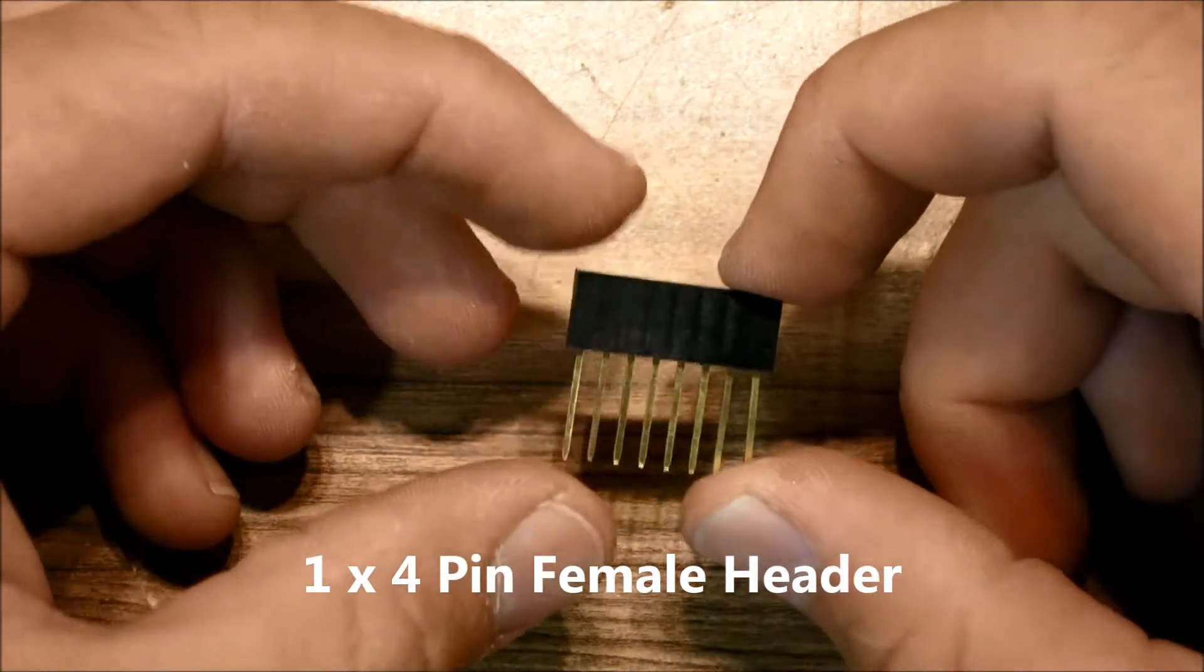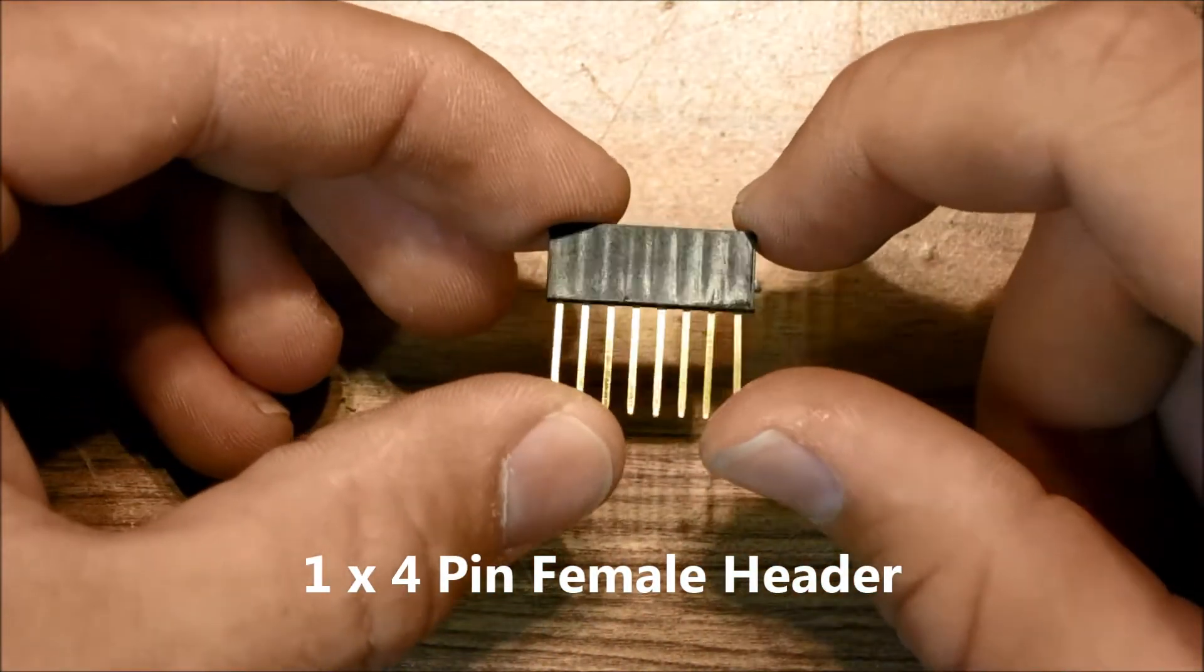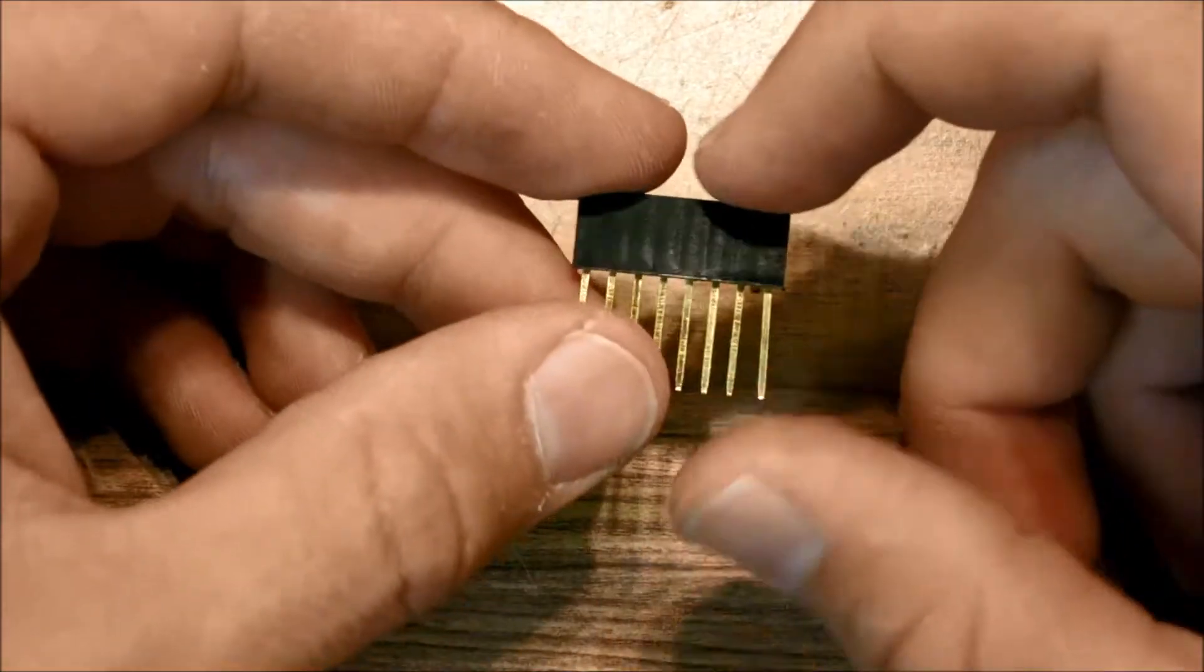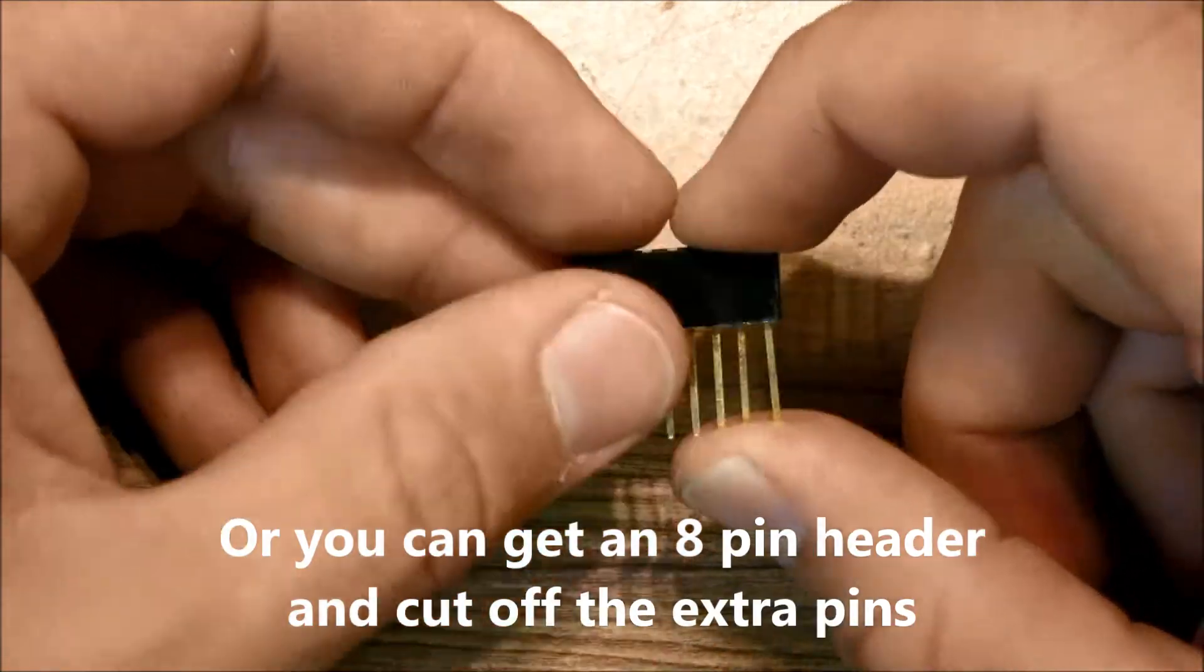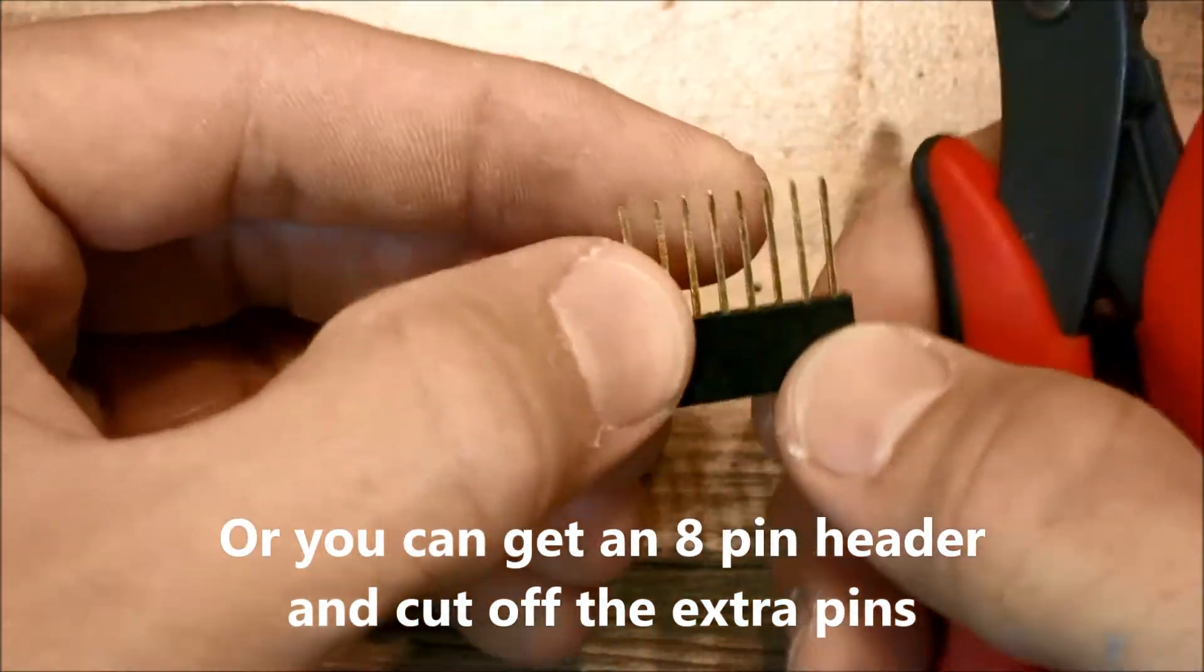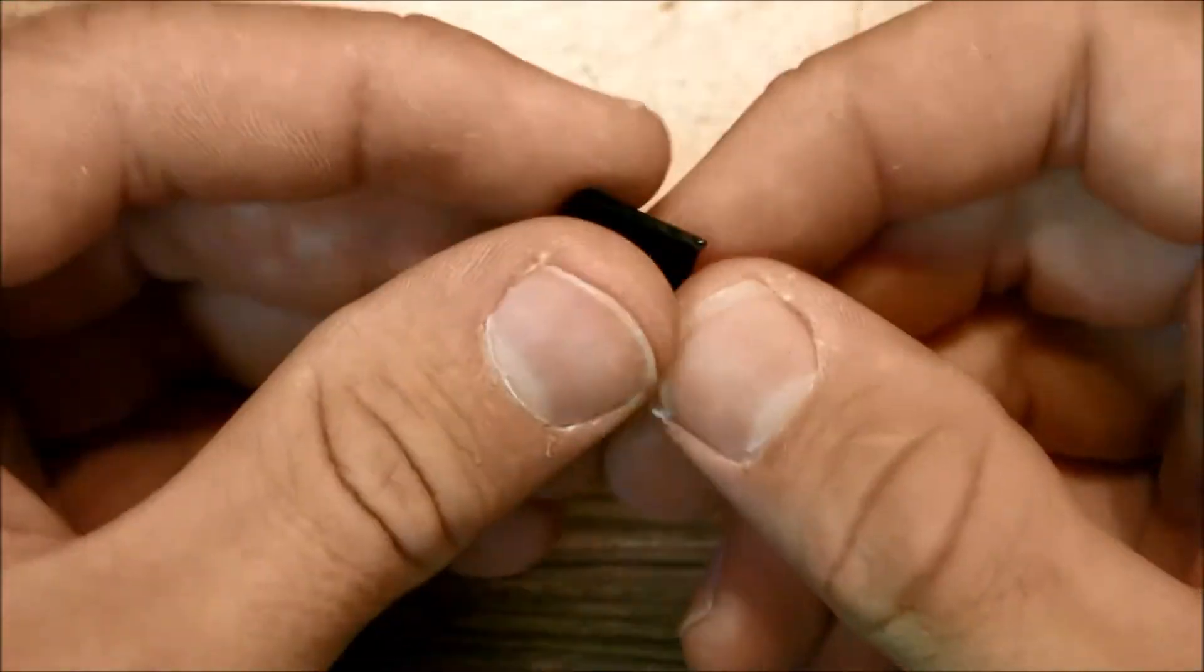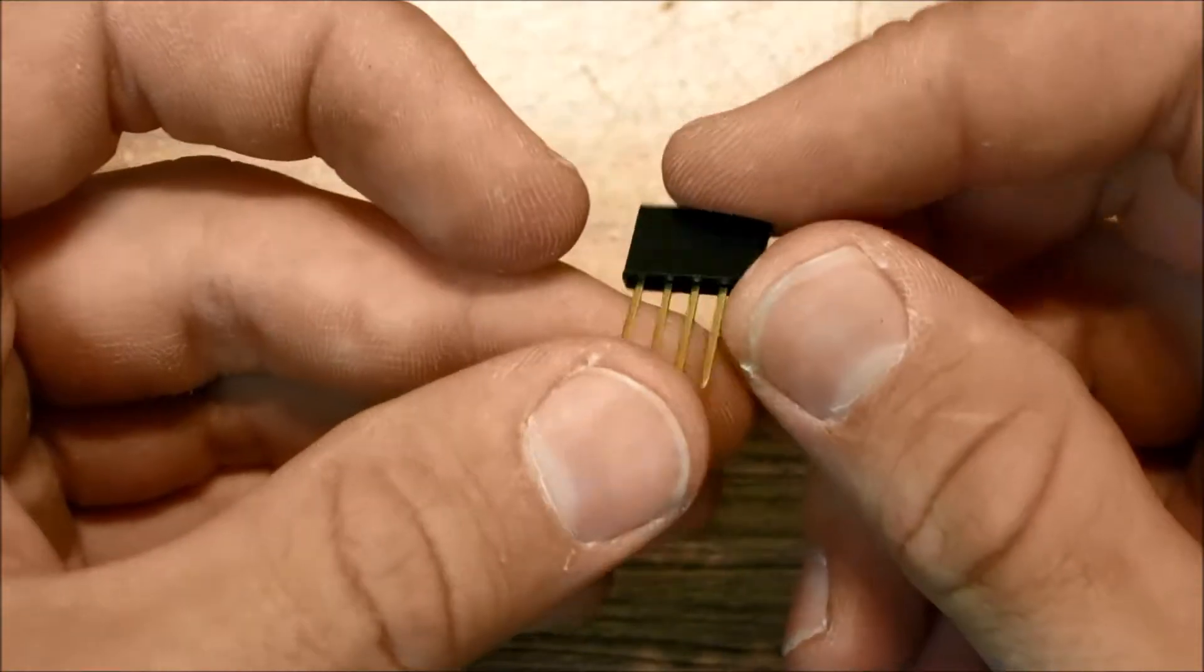You'll need a 4 pin female header and since 4 pin female headers with really really long pins like this are kind of hard to find, you can get yourself an 8 pin header like this and just take wire cutters and then trim off the extra pins. So there we go, we have a 4 pin female header from an 8 pin female header.